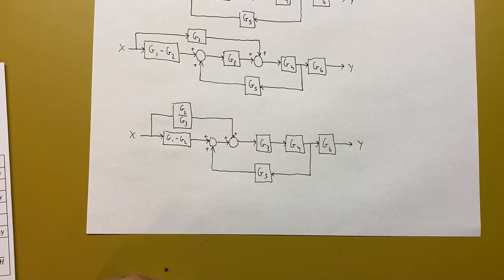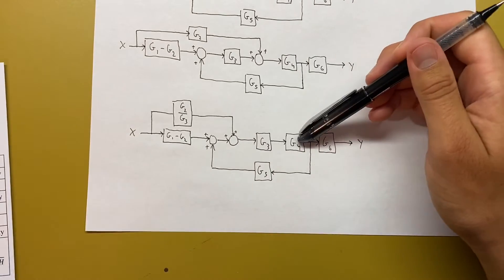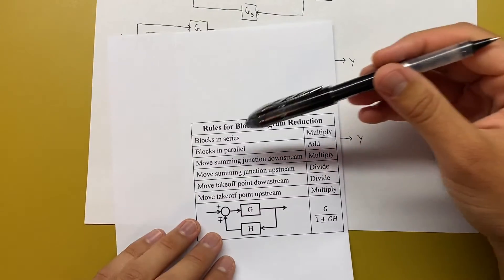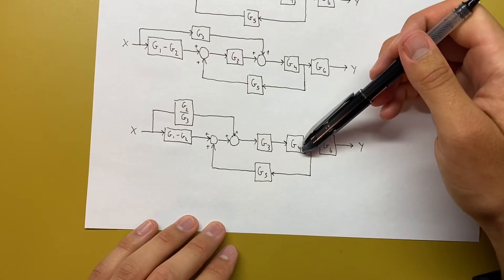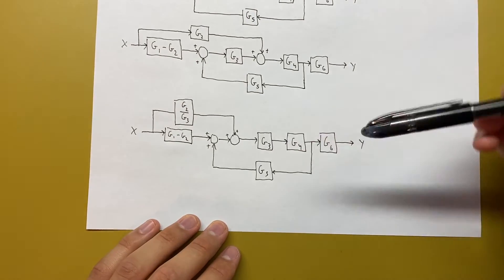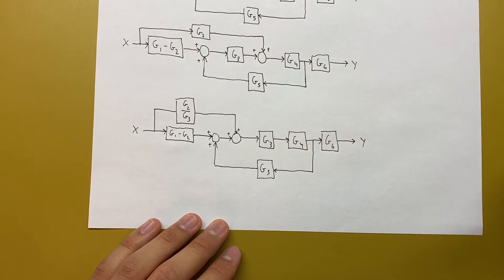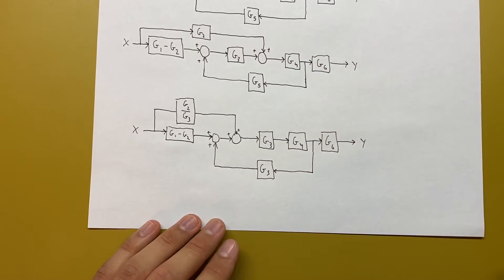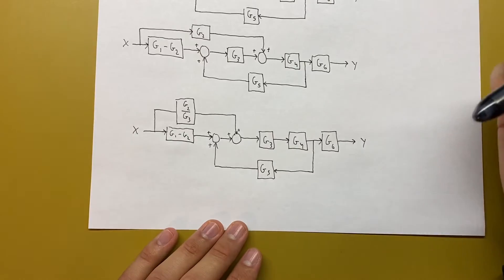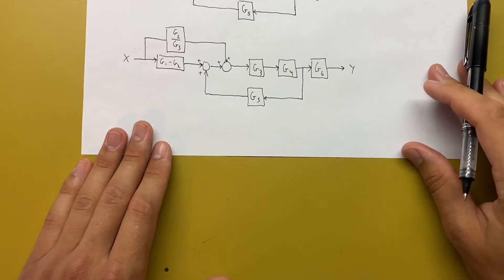Now that we've got this redrawn with the summing junction moved, we can see that g3 and g4 are in series. From our rules, we know blocks in series we just multiply them, so we can combine those two into one block called g3g4. Also in this step, I'm going to switch the location of these two summing junctions — that's just a visual switch, because since it's all addition, you get the same result either way. So I'm going to switch these two locations and combine these two.